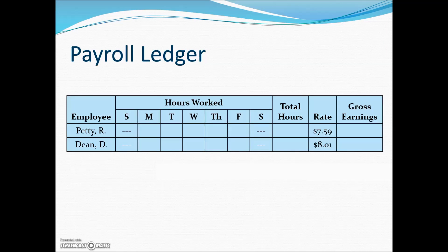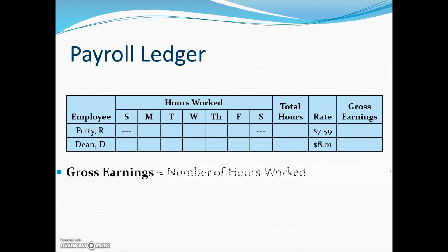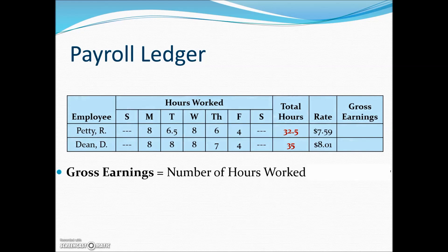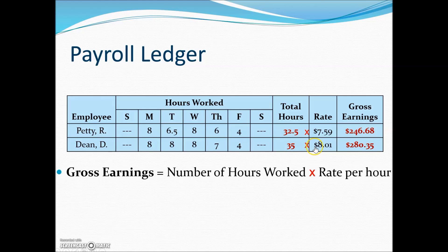The information on these cards is then transferred to a payroll ledger, a chart showing all payroll information, and from there we can calculate the gross earnings. Gross earnings are found by taking the number of hours worked times the rate per hour. Here we have an example of R. Petty, who worked a total of 32.5 hours, multiplied by the rate to give us the gross earnings. Similarly, D. Dean had a total of 35 hours, multiplied by the rate per hour, so every hour worked this individual receives $8.01 for a gross earnings of $280.35.